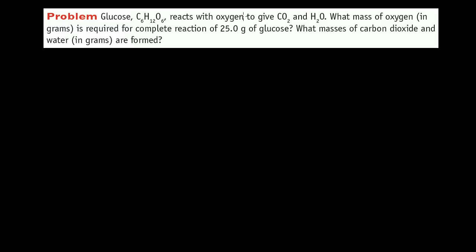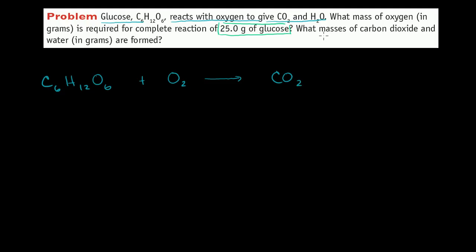We're told that glucose reacts with oxygen to give carbon dioxide and water. What mass of oxygen in grams is required to complete the reaction of 25 grams of glucose? They also want to know what masses of carbon dioxide and water are formed. So let's first write the reaction: glucose C6H12O6 reacts with molecular oxygen O2 to give the products carbon dioxide and water.